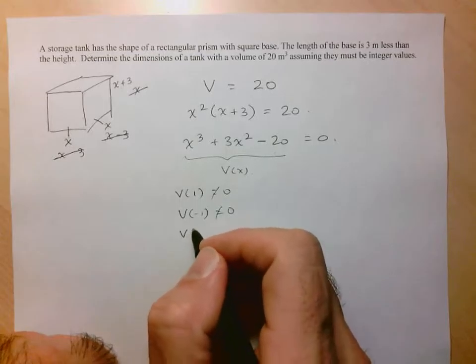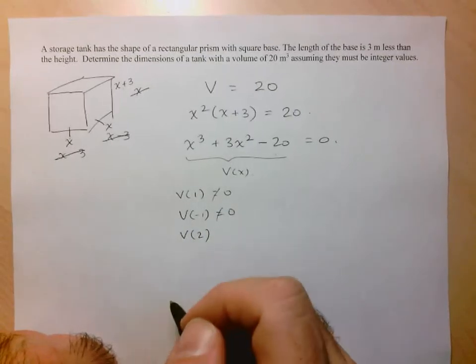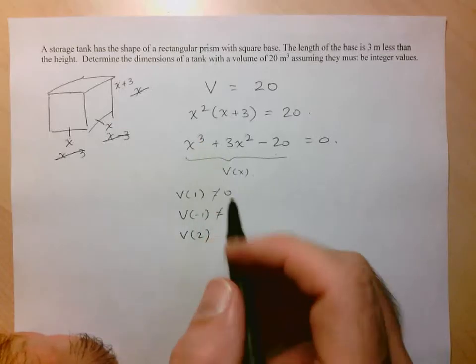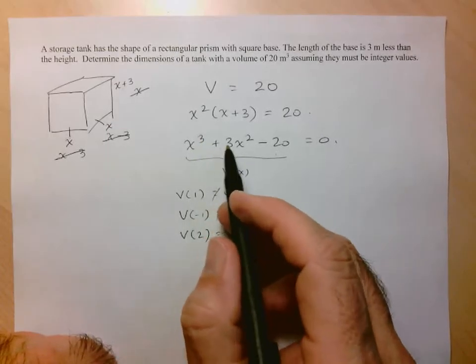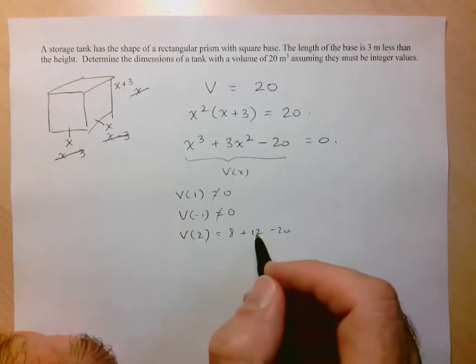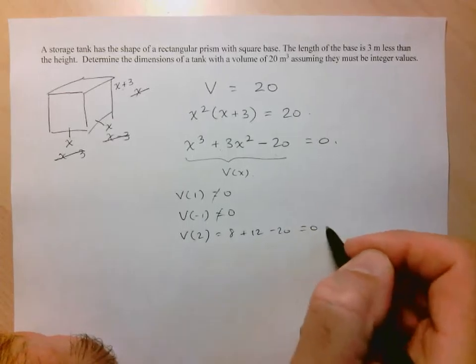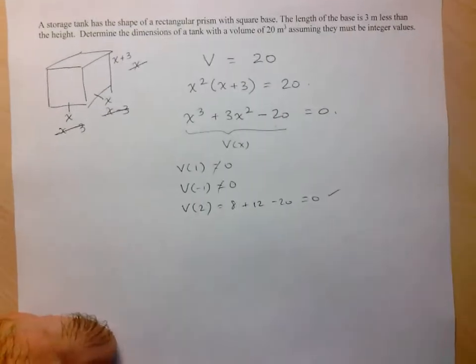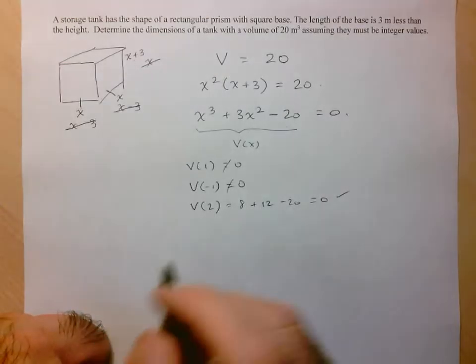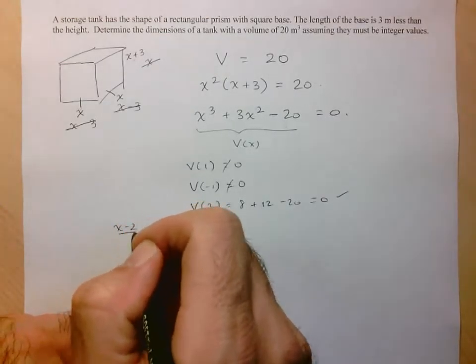Let's try now the next set. Let's do 2. So here 2, 2 cubed is 8, plus 3 times 2 squared is 4, plus 12, minus 20, and here we have 20 minus 20 equal to 0, so that works. So that means that x minus 2 is a factor of my polynomial.